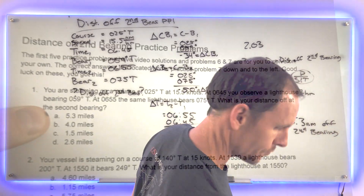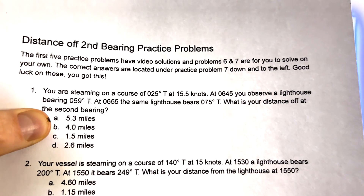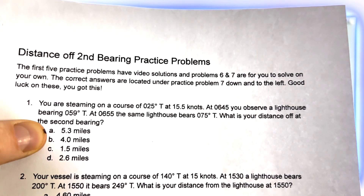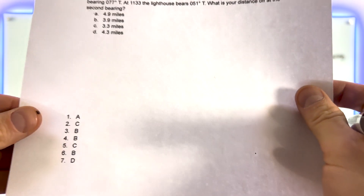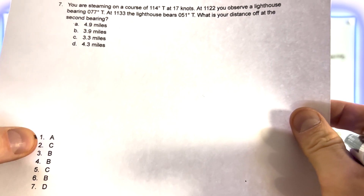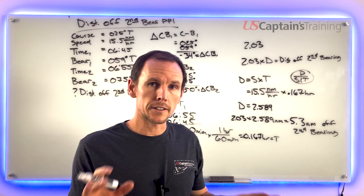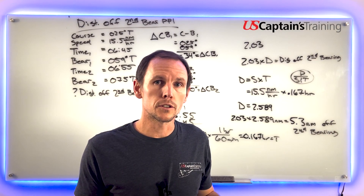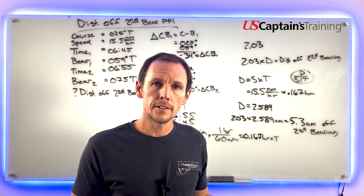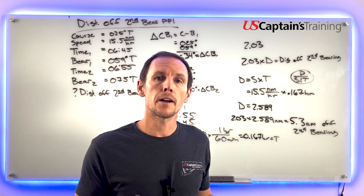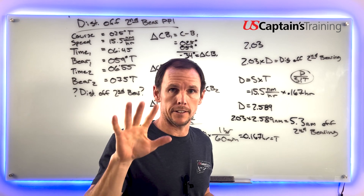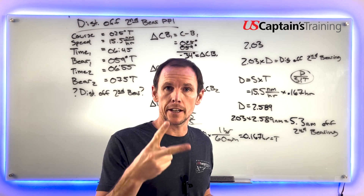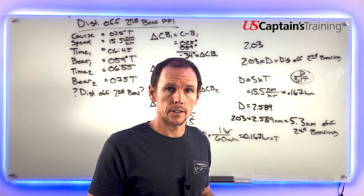Let's verify: in problem one, the answer shown is 5.3 — and checking it against the answer key confirms it. That's the solution to distance off second bearing practice problem one. We're going to solve five of these, and then you'll have two to do on your own.